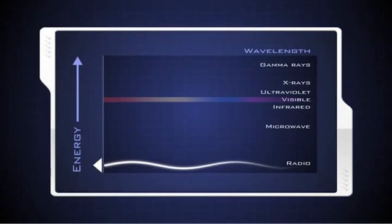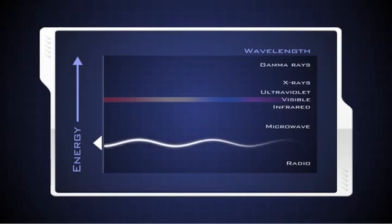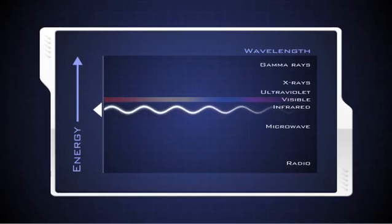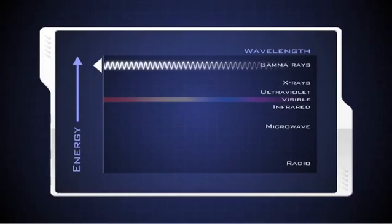Long EM waves, such as radio waves, have the lowest frequency and carry less energy. Adding energy increases the frequency of the wave and makes the wavelength shorter. Gamma rays are the shortest, highest energy waves in the spectrum.